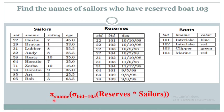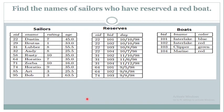Finally, the resultant relation consists of the names of the sailors who have reserved Boat 103. Let us solve another example: Find the names of the sailors who have reserved a red boat.